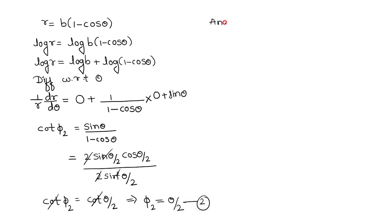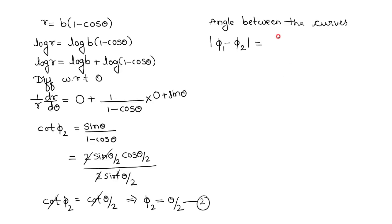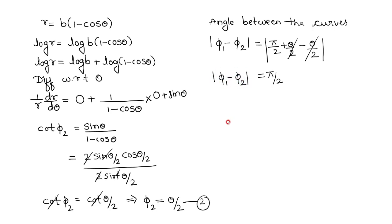The angle between the curves is |φ₁ − φ₂| = |(π/2 + θ/2) − θ/2| = π/2. So the angle between the curves is π/2. The same question can be stated as: show that both curves are orthogonal. If the curves are orthogonal, we need to show that the angle between them equals π/2. Thanks for watching the video.